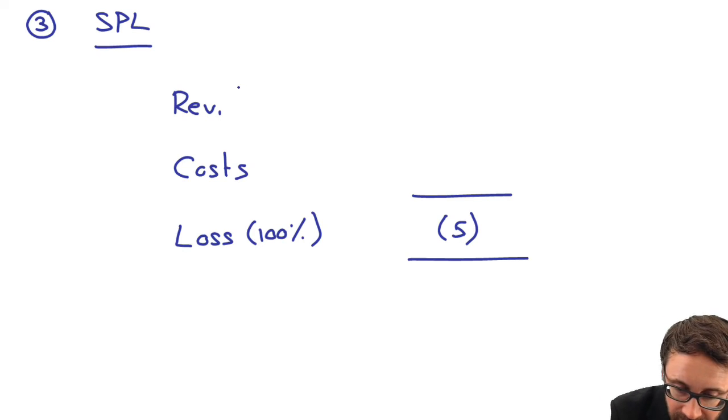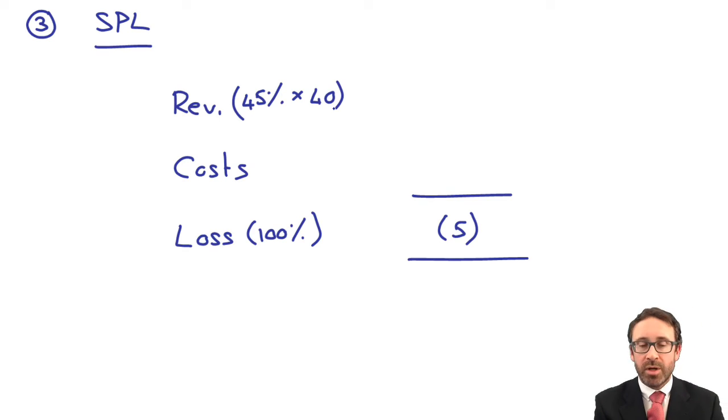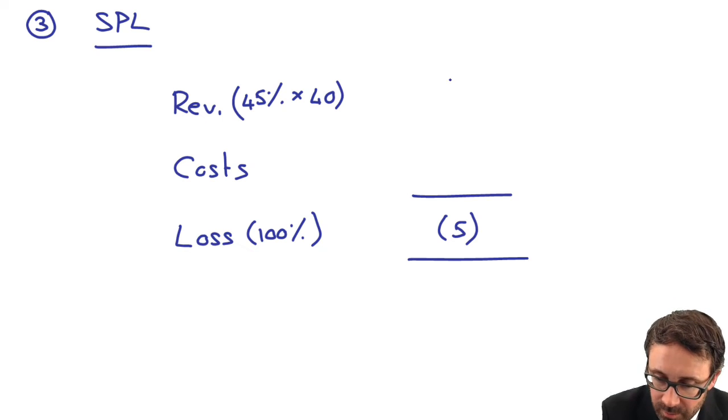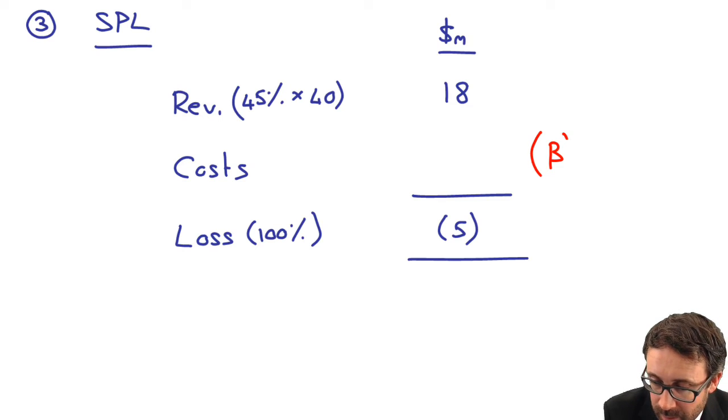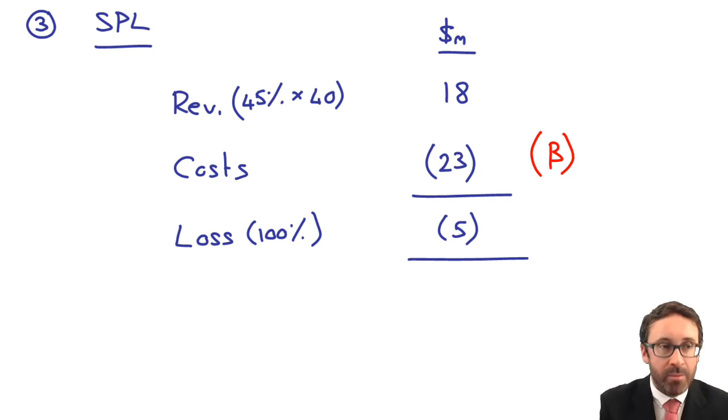The revenue, how do we recognize the revenues? Well, we're told that it is 45% complete. Therefore, we're going to recognize 45% of the total contract revenue of 40, which gives me 18. And what we then do is we work out the costs for the year as a balancing figure. That works out to 23.